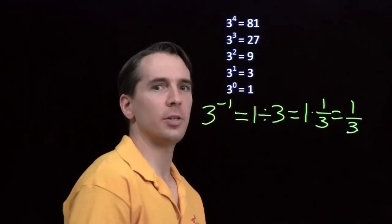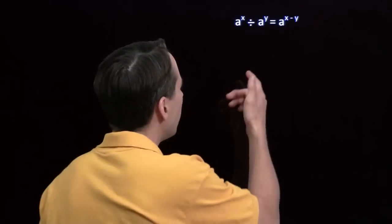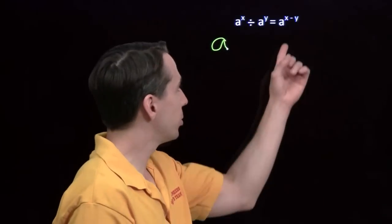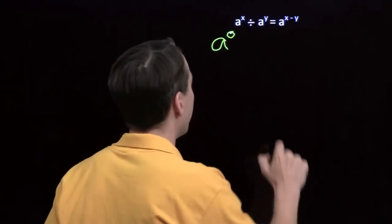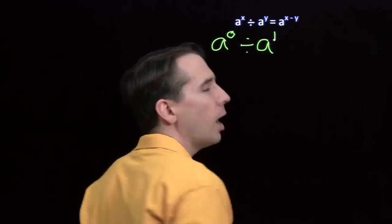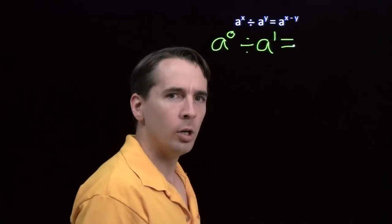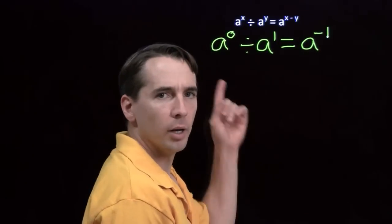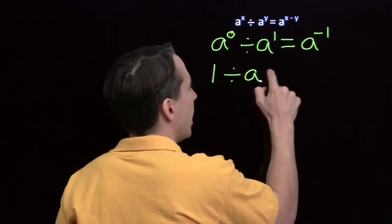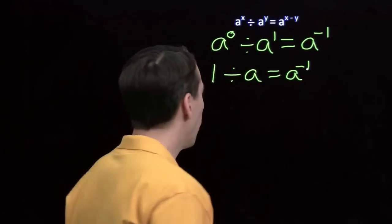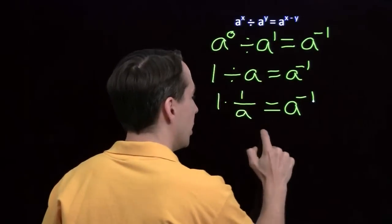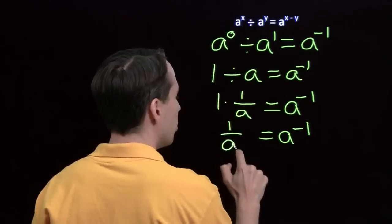When we were looking at raising numbers to the 0, we also looked at an exponent rule. We thought about what happens if x and y are equal. Now let's use this rule to look at what happens when we raise a number to the negative 1 power. I'll choose x and y strategically: let x be 0 and y be 1, so x minus y gives 0 minus 1, which is negative 1. A to the 0 is 1, and a to the 1 is just a. So we see that a to the negative 1 should be 1 divided by a — that means we're multiplying by the reciprocal of a. A to the power minus 1 is just the reciprocal of a.